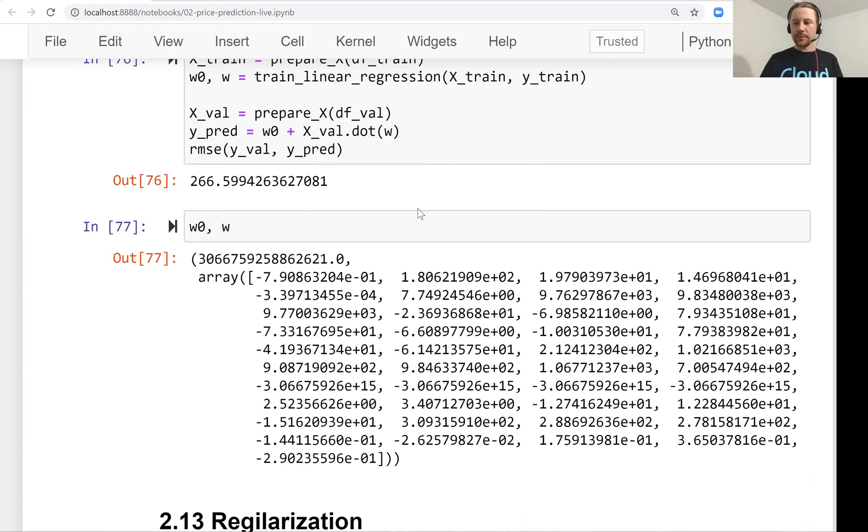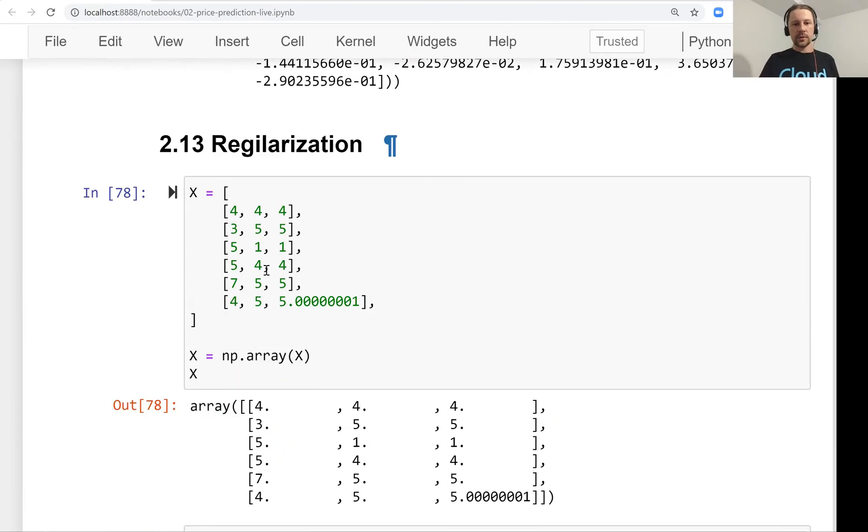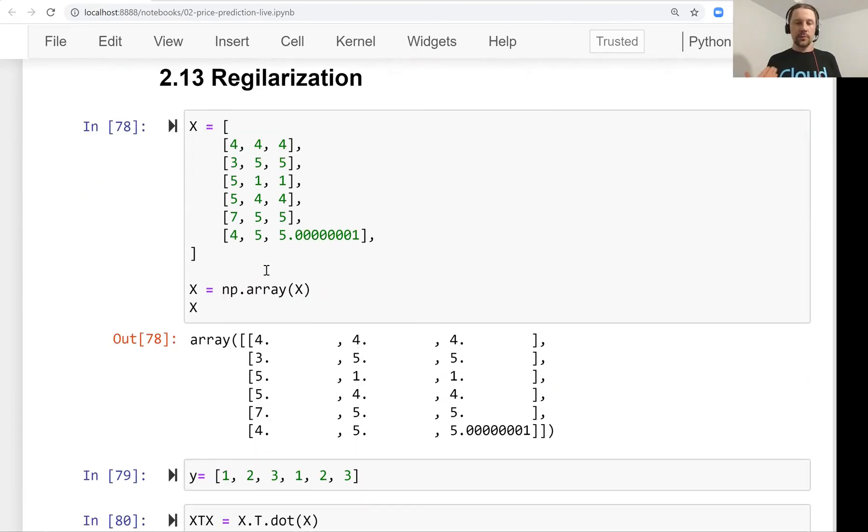After that, we found out that the performance of our model degraded significantly. All of a sudden, RMSE became very huge. Luckily, we had this validation framework, we had this validation dataset, so we could spot the problem easily. The reason for that was numerical instability, which we discussed next.